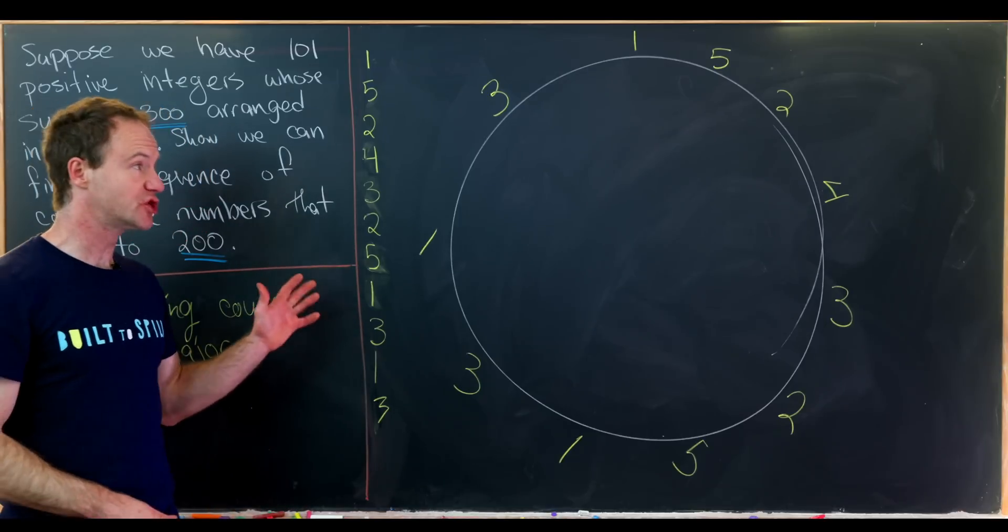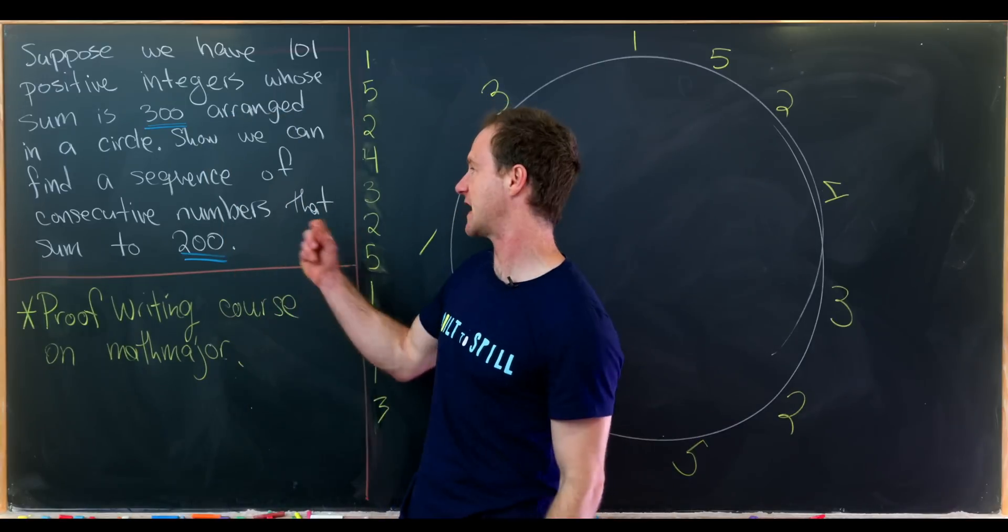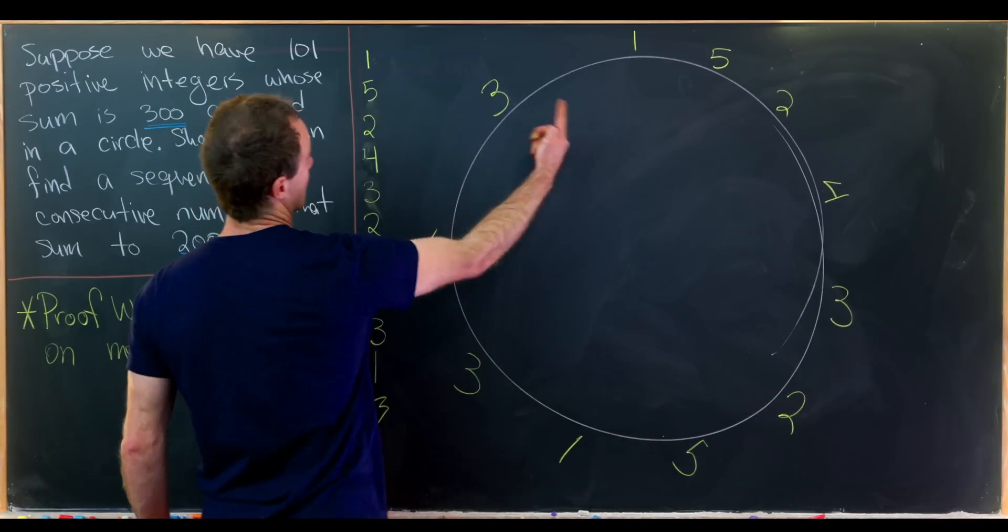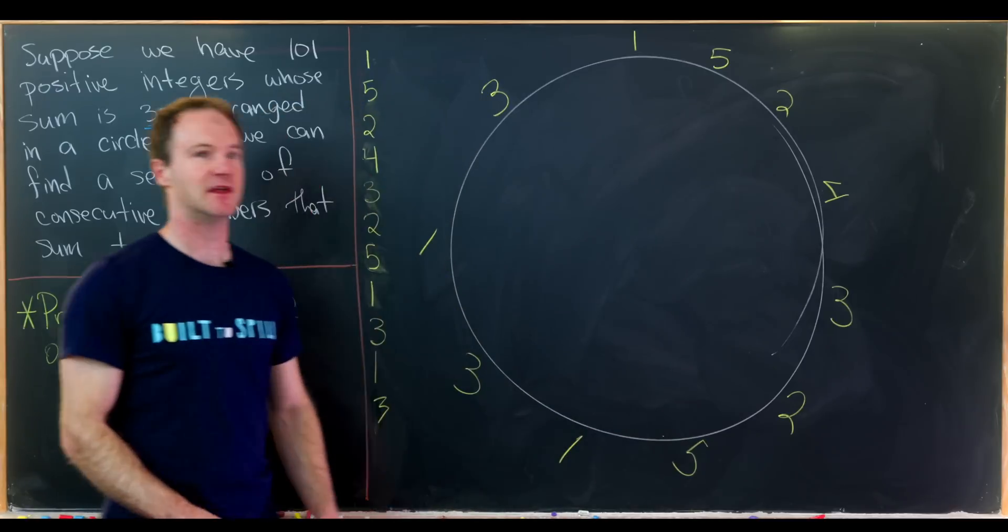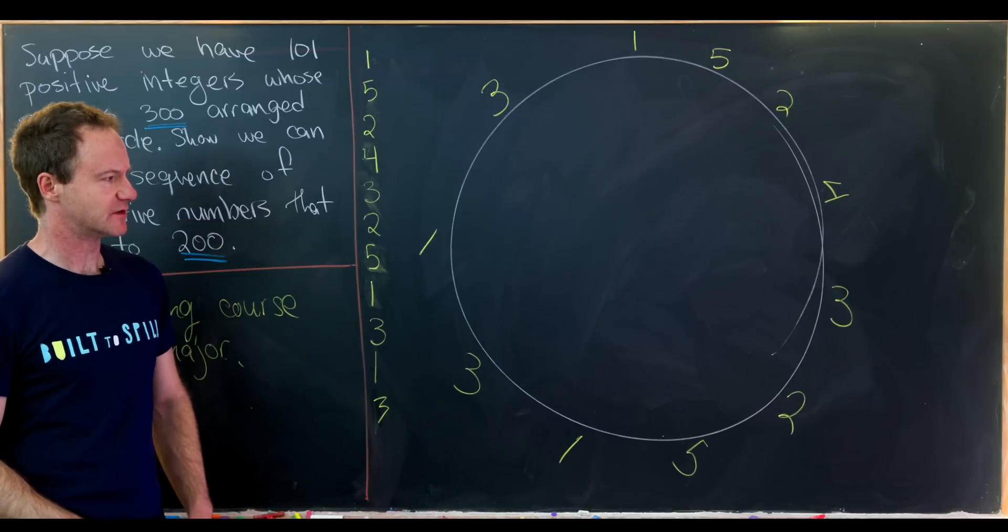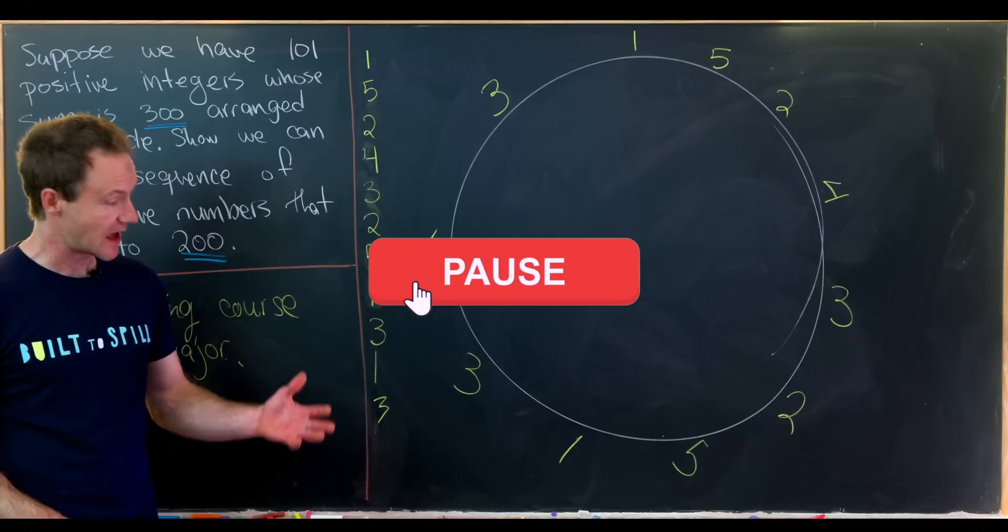But we should be able to, based off this being a simplification of our bigger problem, find an arc along this circle where if we add the numbers along that arc we get 20. So maybe you want to pause the video and see if you can find that arc right now.